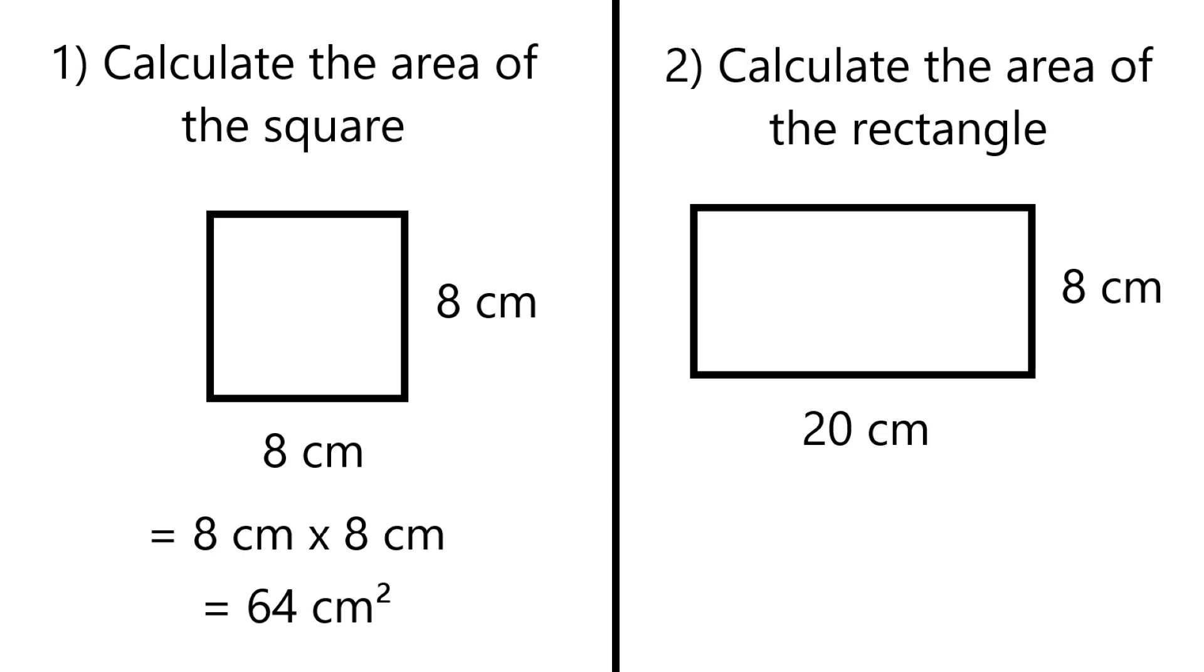That would be 64 centimeters squared because you're looking at 64 times a centimeter times a centimeter. It's centimeter squared because it's two dimensions, just like if it was a 3D object it would be cubed because it's three dimensions.